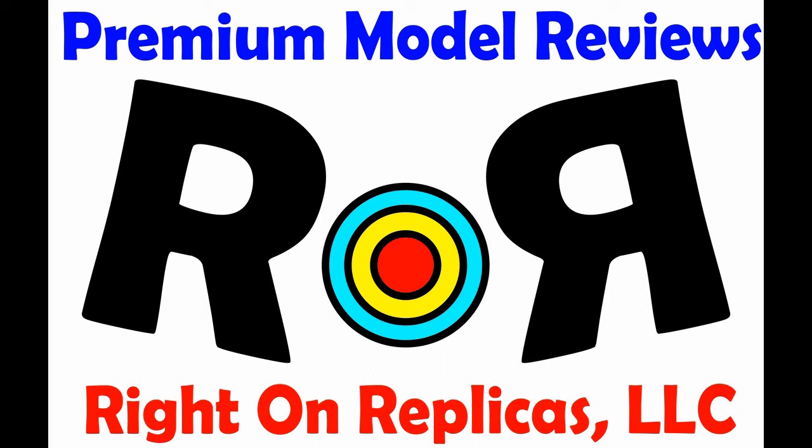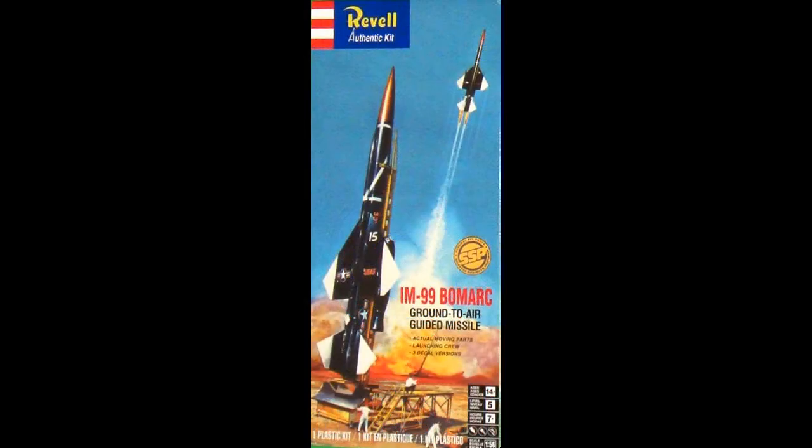Welcome to Right on Replicas, where we're proud to bring you the best scale model kit reviews on the planet. This review covers the 2016 re-release of the IM-99 Bomarc, a ground-to-air guided missile in 1:56 scale by Revell. It's model kit number 85-1806 and it's a skill level 5 kit requiring glue and paint. It's recommended for ages 14 and up. The pieces are molded in gray with water slide decals and there's 61 pieces to the kit and the instructions are very well laid out.